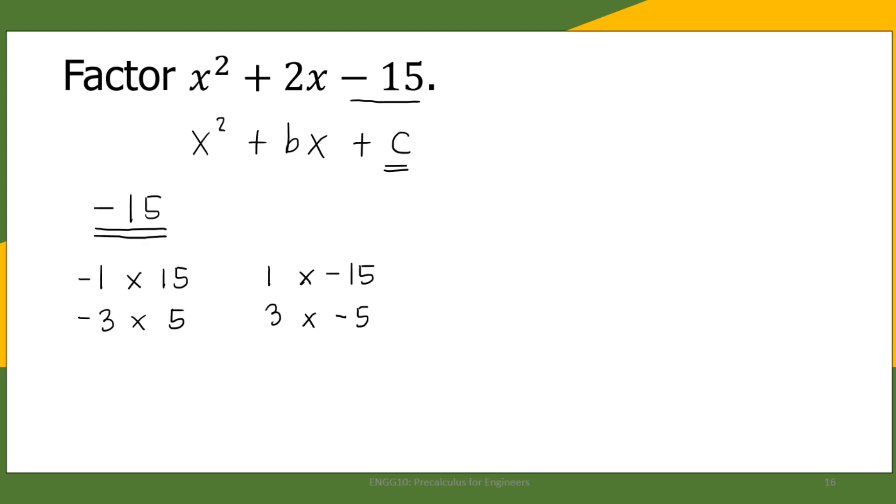Now, from the list of factors that we listed, let's look for the pair where, when we add them, the sum is positive 2. Let's take a look at each pair of factors. -1 + 15 is not equal to positive 2, we cross that out. 1 + (-15) is not equal to positive 2. -3 + 5 equals positive 2. On the other hand, 3 + (-5) is negative 2. So this is the pair of factors we are looking for.